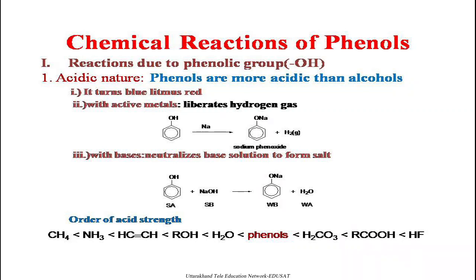The first test is with litmus paper: if we take a blue litmus paper and dip it in a phenol solution, it will turn red, showing its acidic nature. Next is with an active metal. Phenols on reaction with any alkali metal like sodium, lithium, or potassium liberate hydrogen gas — the hydrogen of the OH group is replaced by sodium — which shows the acidic nature of the phenol. This hydrogen present on the OH group is acidic in nature.